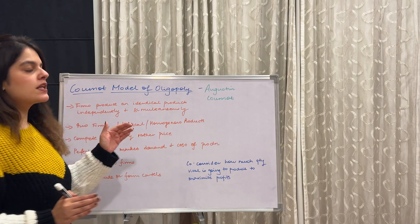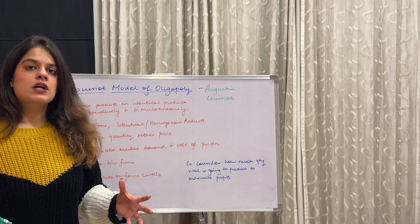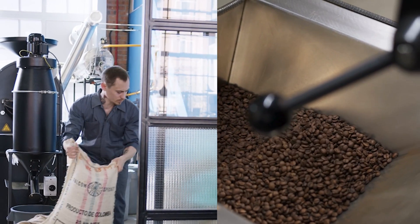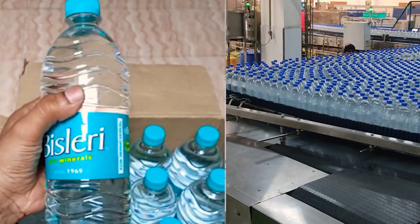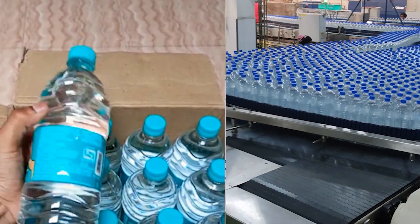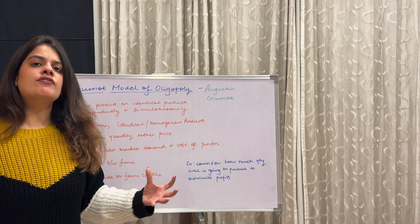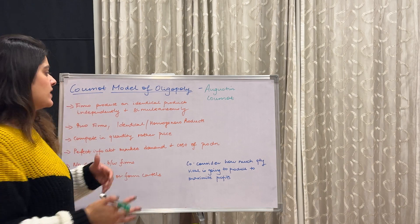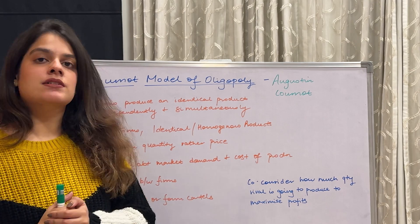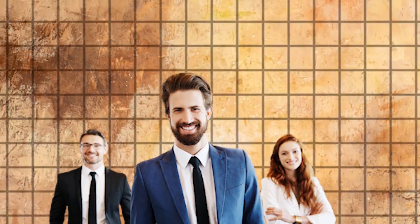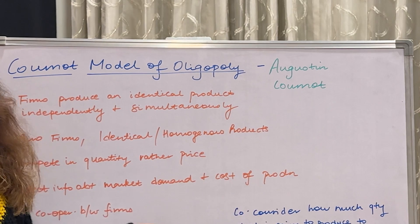In this model, we are talking about two firms who are working on producing identical goods — whatever they are doing is exactly the same. Firms produce identical products independently and simultaneously. For example, think of Aquafina and Bisleri, two companies producing water, exactly the same. Both know there are rivals, and both know that changes in their price or quantity will definitely have an effect on the rivals. Please focus on the word 'simultaneously' — here we are working on a simultaneous model. In Stackelberg's model, which was a sequential model, the leader moved first and then the followers, but here it's happening simultaneously.